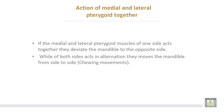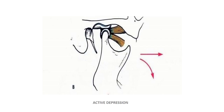Action of medial and lateral pterygoid muscles: if the medial and lateral pterygoid muscles of one side act together, they deviate the mandible to the opposite side. While if both sides act together — that is to say all four pterygoid muscles act in alternation — they move the mandible from side to side, producing chewing movements. This is active depression by the lower head of the lateral pterygoid muscle.